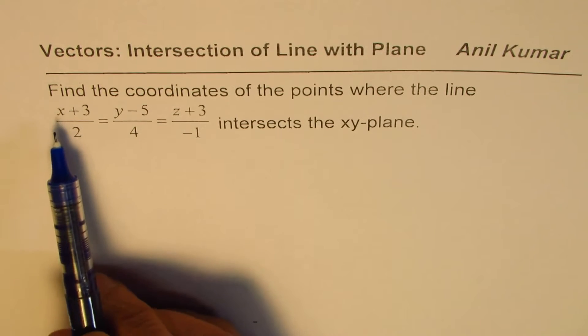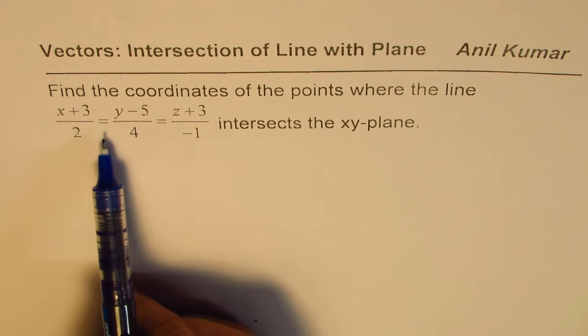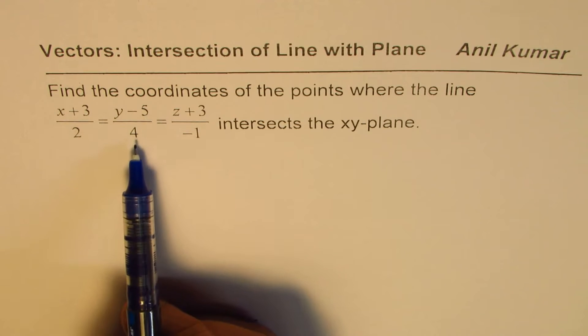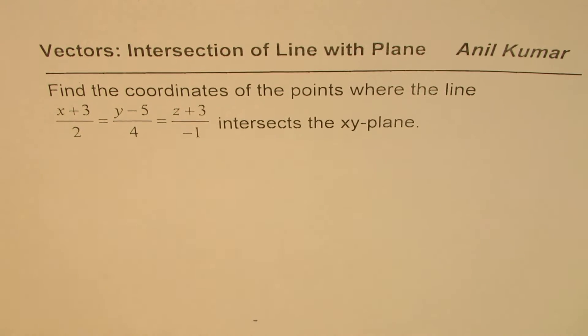The equation of the line is x plus 3 divided by 2 equals to y minus 5 over 4 equals to z plus 3 over minus 1. You can pause the video, answer the question, and then look into my suggestions.